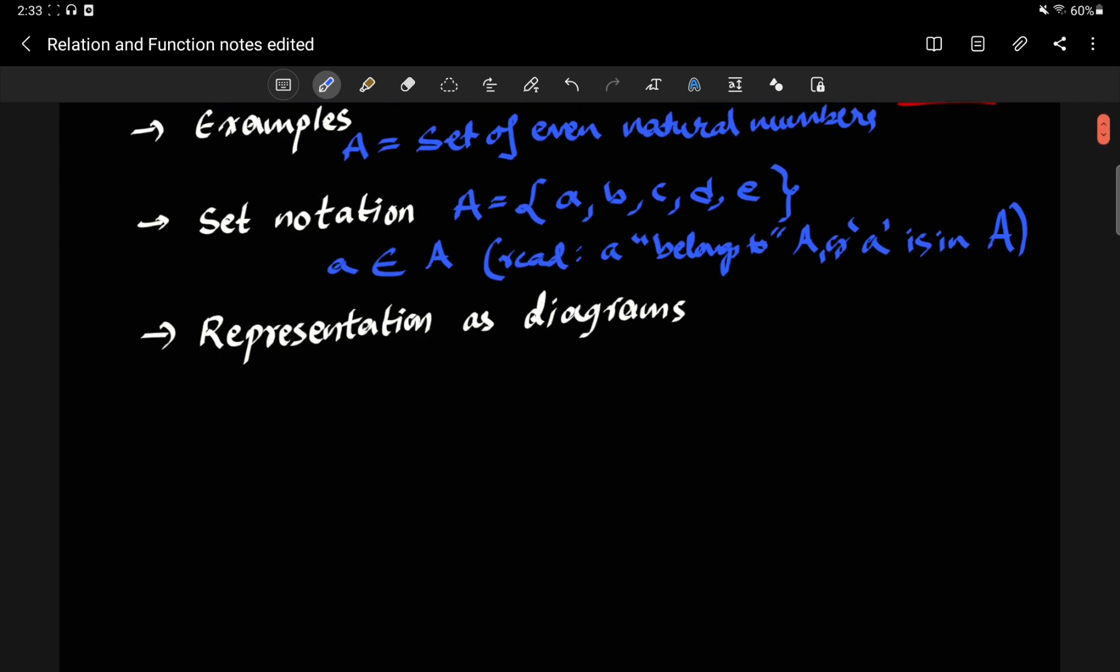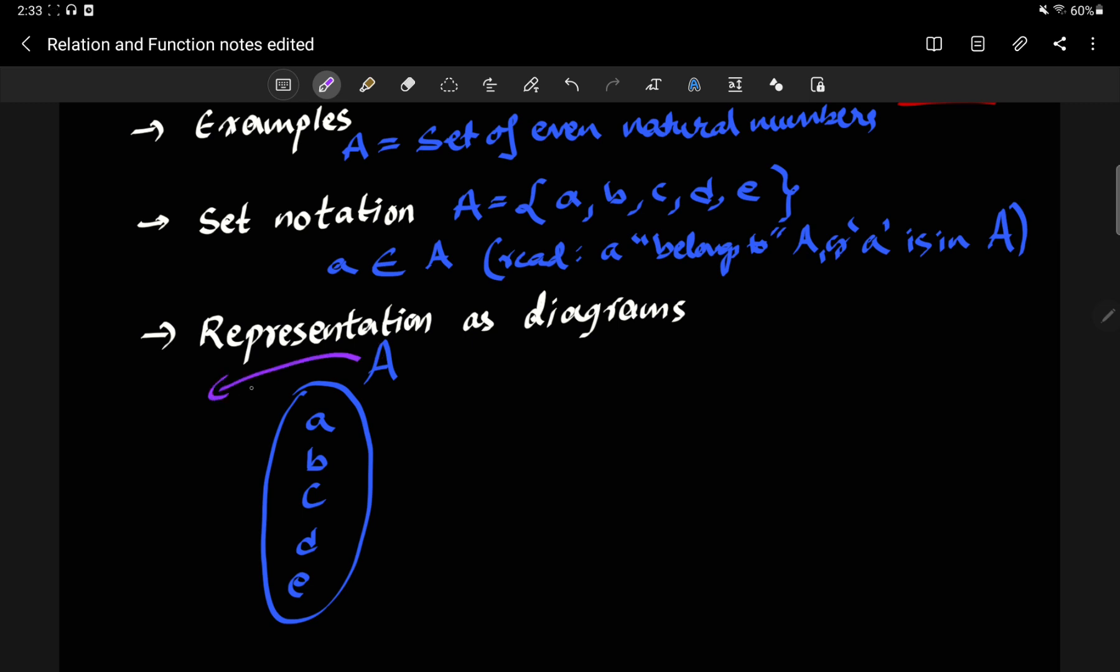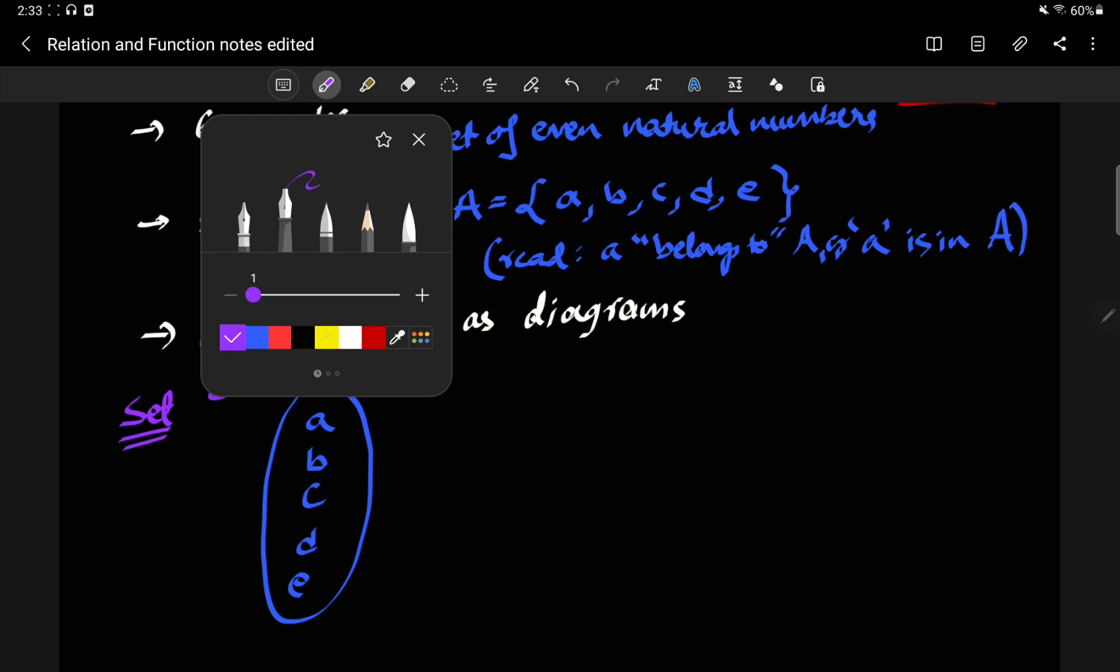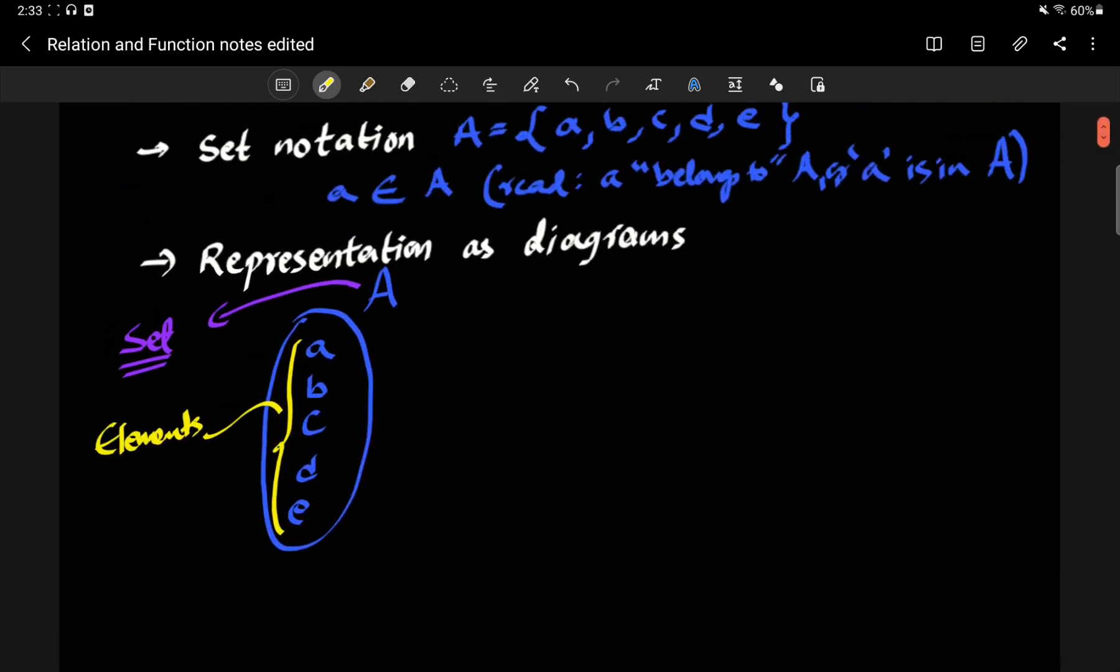And these can be represented as diagrams. For example, I can make this big circle or oval, call this capital A. And I put everything that is in A inside of A. So just to make a distinction here, this A, the capital A, that is the set. And everything that is inside here, these things, these five things, these are called elements of the set. So that's one way of representing a set as a diagram.